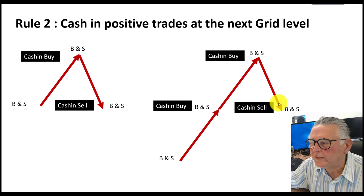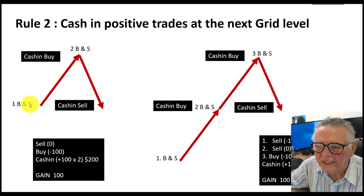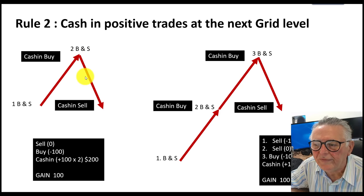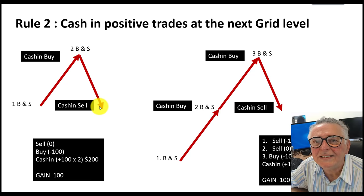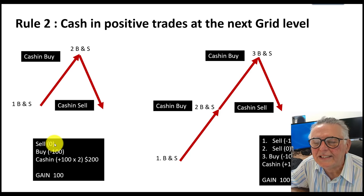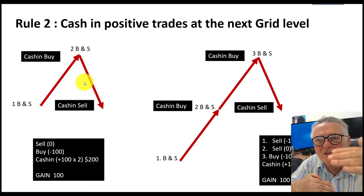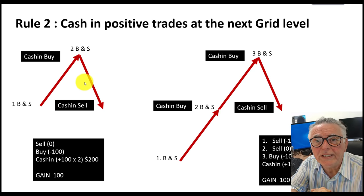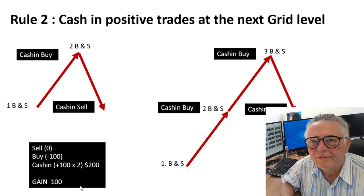Let's apply those two rules. Say we bought and sold at the first level, it went up, we bought and sold again and cashed in the buy, then it went down to the same grid level as before. We would have cashed in one buy going up and one sell going down, but there's an open sell at zero profit and an open buy still negative. Using 100-pip grid gaps for illustration: we've cashed in 200 pips, one open deal at minus 100, one at zero — we've made a net gain of 100 pips.